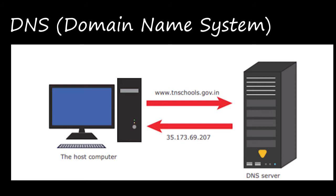For example, when you type www.tnschools.in, the DNS changes that domain name into its IP address, which is 35.173.69.207. This is the IP address of that particular website. The domain name system translates the domain name to the web address, and that IP address leads to the correct website you are searching for.